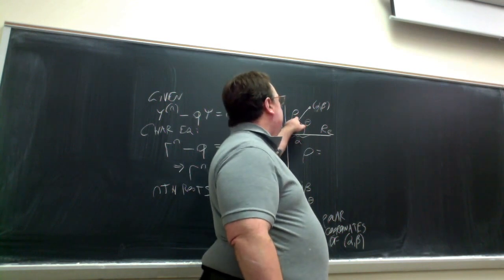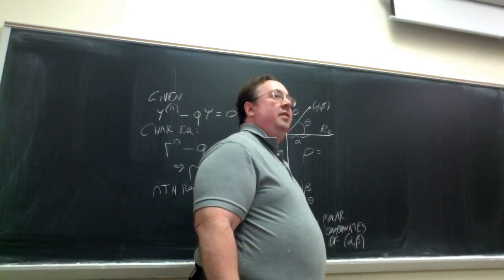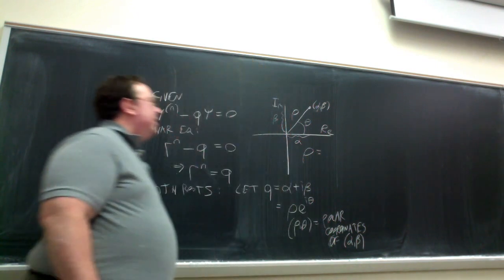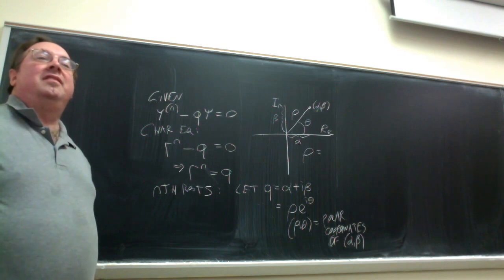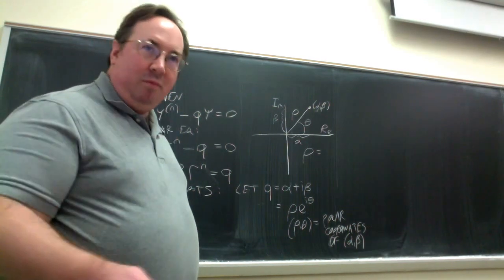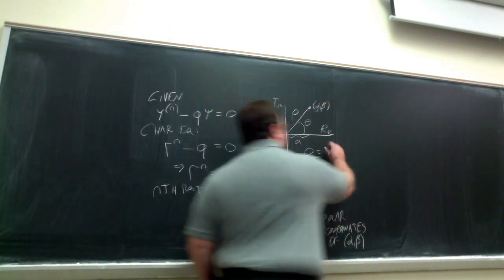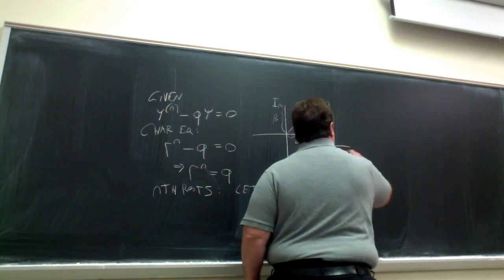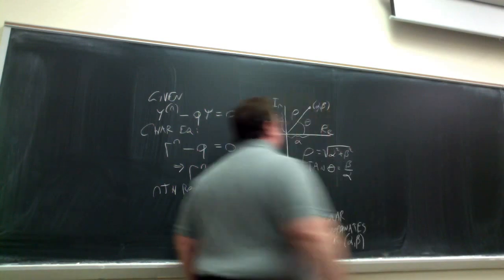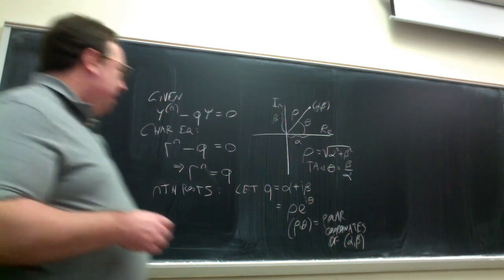Who remembers how to get this coordinate, rho, in terms of alpha and beta? It's the magnitude of the vector. Yes, and that is given by the square root of alpha squared plus beta squared. And then the angle, tangent of theta is beta over alpha. So that's how you get this representation.